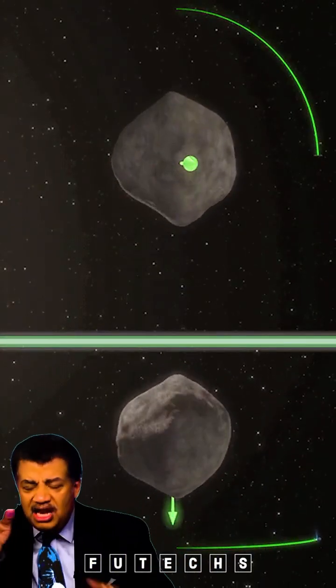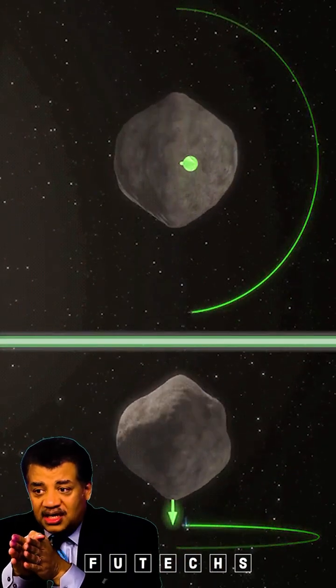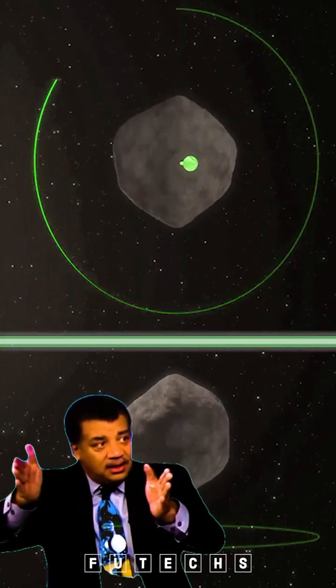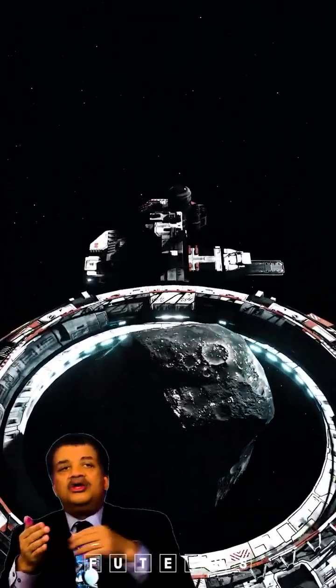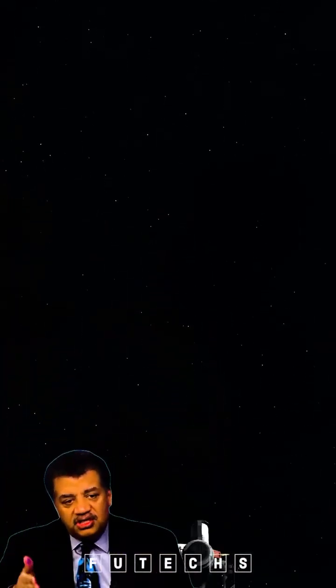And if you get this early enough, one centimeter per second, the tiniest amount will accumulate over time. And you just have to make it so that it overshoots Earth or undershoots Earth compared to the original path.